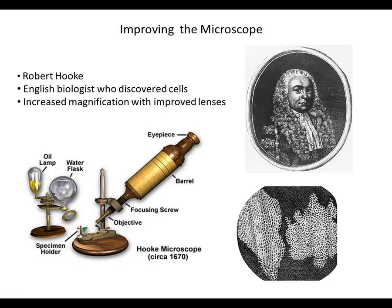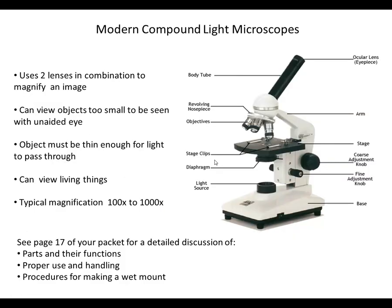This improved microscope was a big step forward and allowed for the development of what we call the cell theory. Robert Hooke is most credited with discovering and naming cells, and is responsible for the first part of cell theory: that all living things are made of cells. Modern compound light microscopes have obviously come a very long way. The parts and their functions will become very familiar to you over the next week or so.